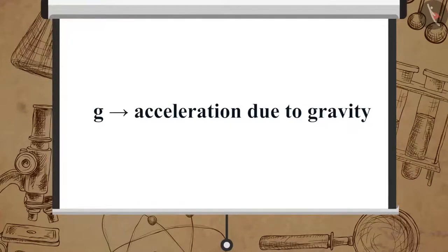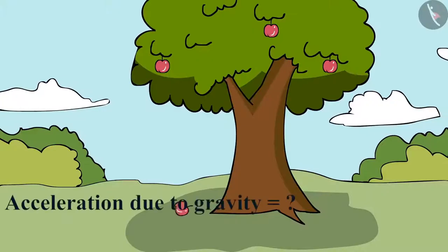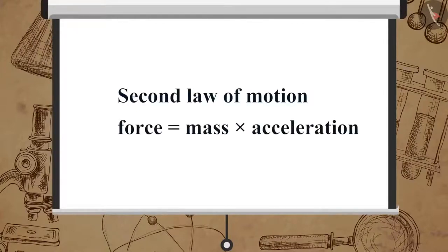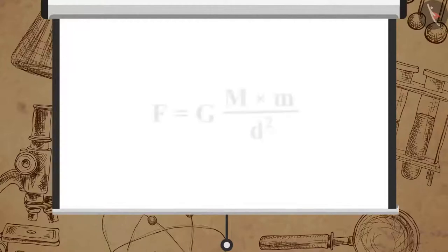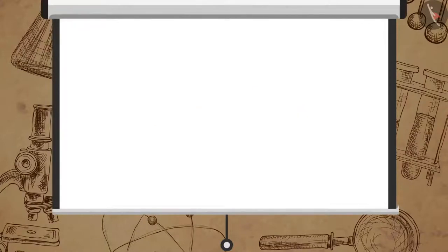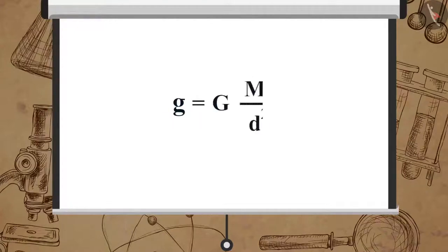Now let us derive the formula for acceleration due to gravity. From the second law of motion, force equals mass multiplied by acceleration. Let the mass of the ball be M. The gravitational force F = M × g. From the universal law of gravitation, F = G × M / D². Combining these equations: M × g = G × M / D², so g = G × M / D². For objects near the earth's surface, D equals R, the radius of the earth, giving g = G × M / R².